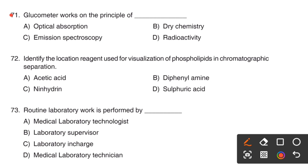Next question. Glucometer works on the principle of dash. Option A, Optical absorption. Option B, Dry chemistry. Option C, Emission spectroscopy. Option D, Radioactivity.